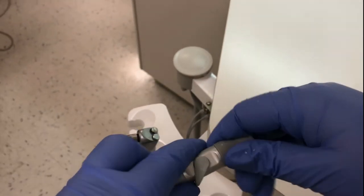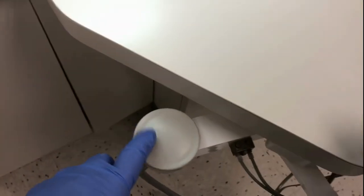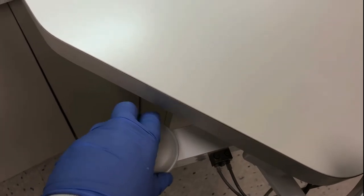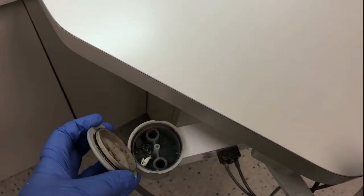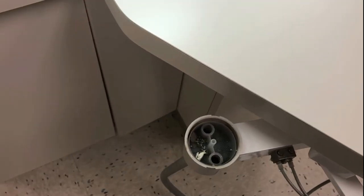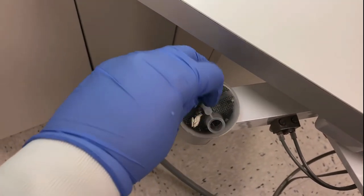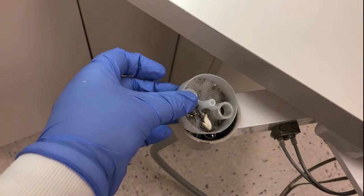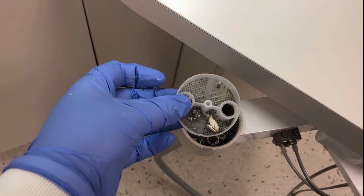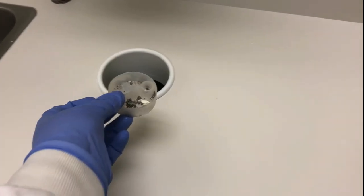Locate the HVE trap and remove the cover. If the trap is full of debris, dispose of the trap and replace it with a new one. Secure the new trap and place the lid on top.